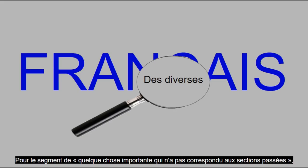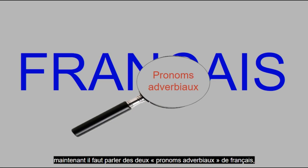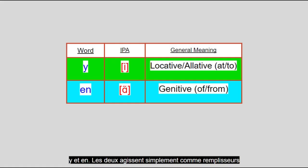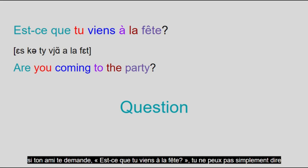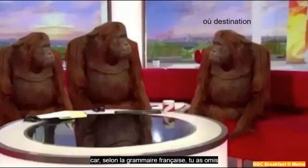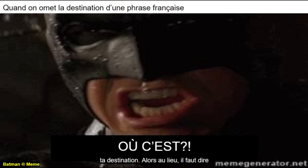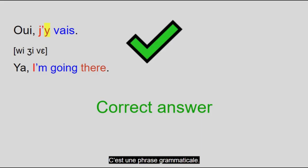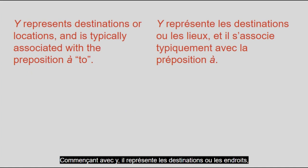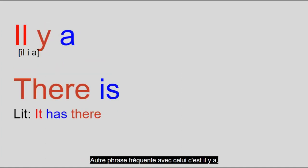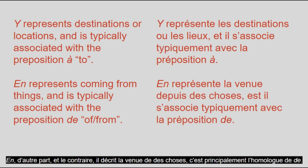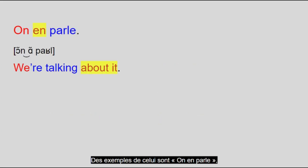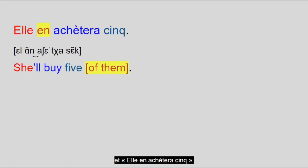For anything important that didn't fit in the previous sections, we have to talk about French's two adverbial pronouns: y and en. Both of them basically act as fillers if there's something missing that you have to include in the sentence. For instance, if your friend asks you est-ce que tu viens à la fête? — are you coming to the party? — you can't just say oui je vais, yeah I'm going, because according to French grammar you left out your destination. So instead you have to say oui j'y vais — yeah I'm going there. Y represents destinations or locations. Another common phrase with it is il y a — there is, often shortened to y'a. En, on the other hand, describes coming from things — it's mainly the counterpart of de, meaning 'of' or 'from.' Some examples: on m'en parle — we're talking about it; je m'en vais — I go away from here; elle en achètera cinq — she'll buy five of them. Additionally, if en is involved in a subordinate clause, then it gets replaced by dont, like in voici la chose dont on parle.